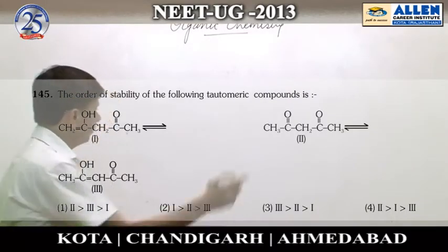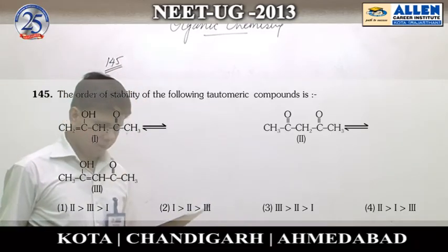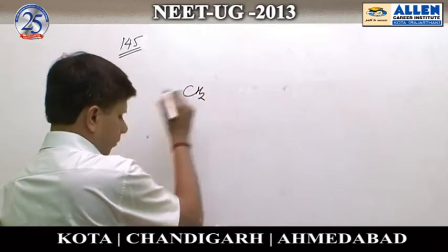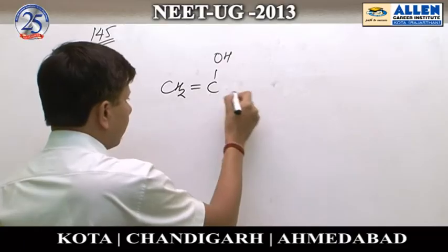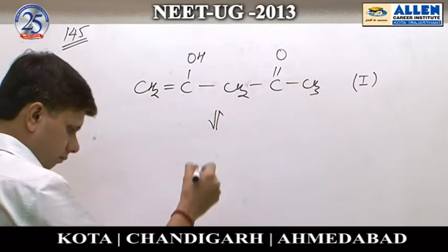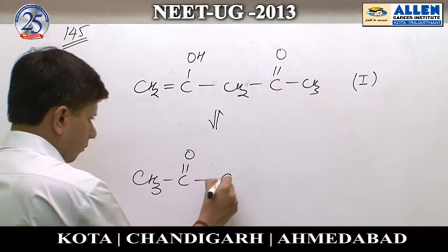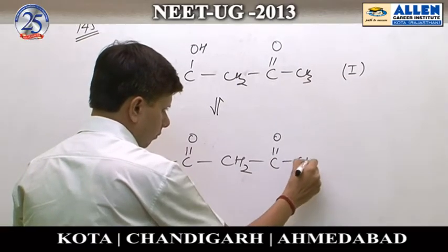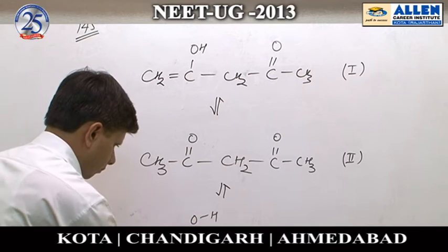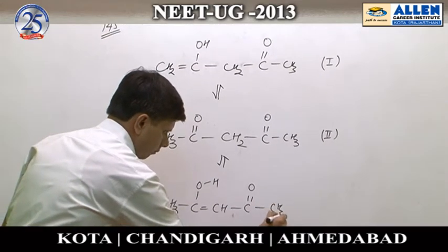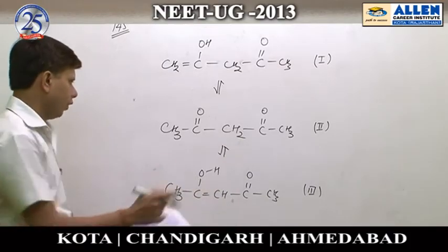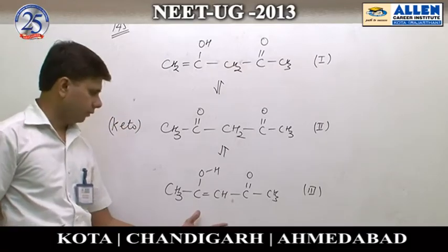Next, question number 145. The question is the order of stability of the following tautomeric compounds. We have to compare the stability of these three tautomeric compounds. In this case, this is the keto form and these are the enol forms of this compound.